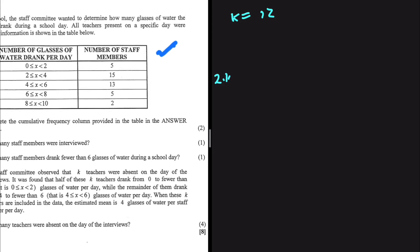On the first column I'm just going to have 5, and then following 5 I'm gonna have 5 plus 15 which is 20. After that I'm gonna have 20 plus 13 which is 33. 33 plus 5 is 38, 38 plus 2 is 40. So your table for the cumulative frequency should look something like this: 5, 20, 33, 38, and lastly 40.